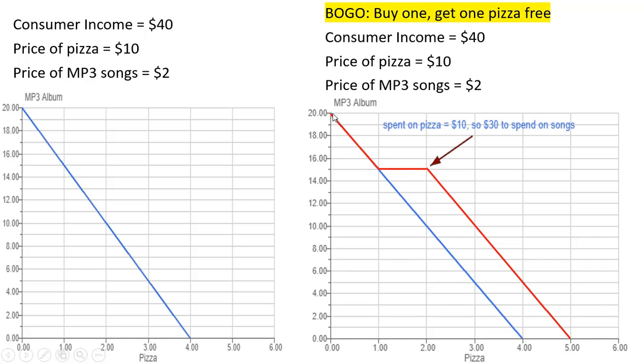It's going to have the same vertical intercept — if we still spent all our money on MP3 songs, we could buy 20 songs at most. That's just 40 divided by 2.